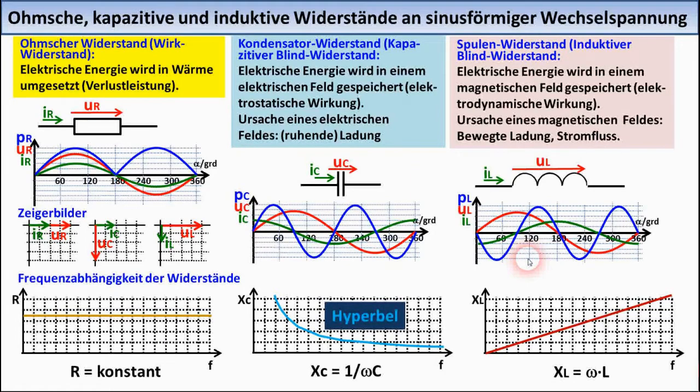You can see this in the line diagrams and in the phasor diagrams. This applies regardless of the frequency. The magnitude of an ohmic resistance is also independent of frequency. The magnitudes of the capacitive reactance Xc and the inductive reactance Xl are however frequency-dependent.